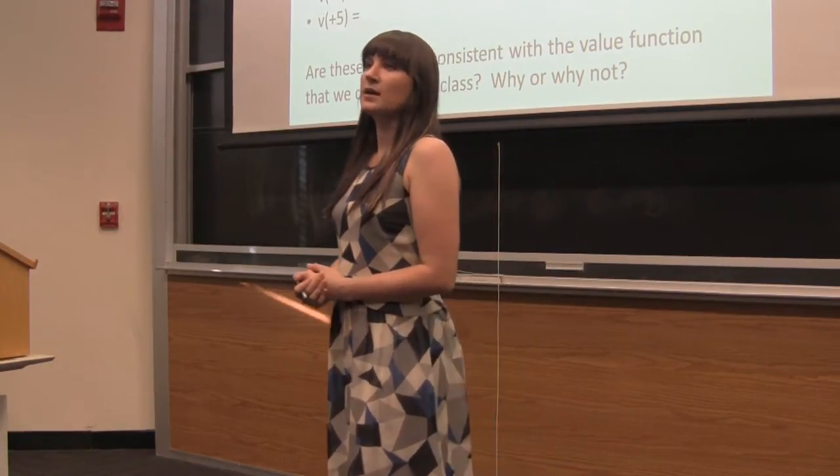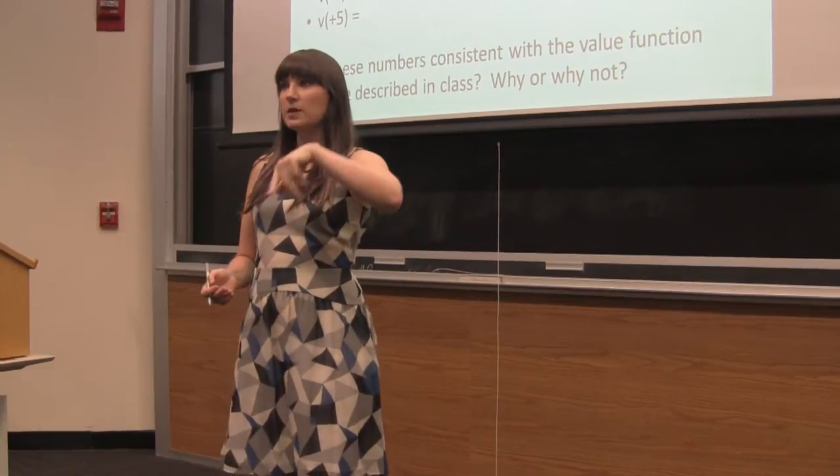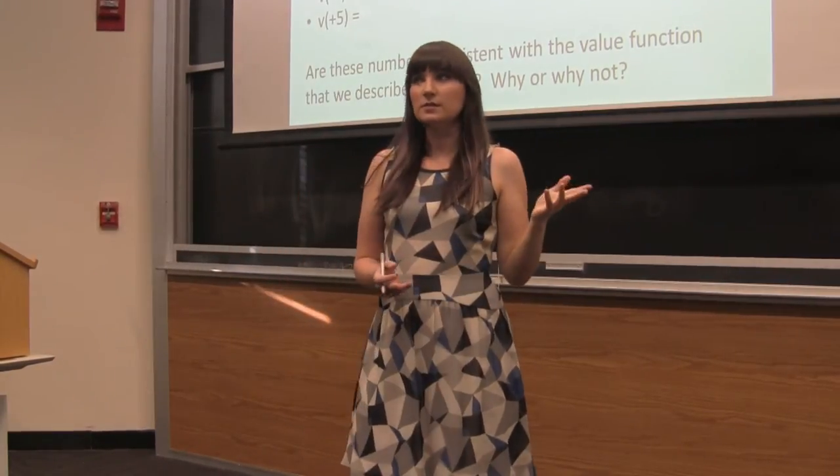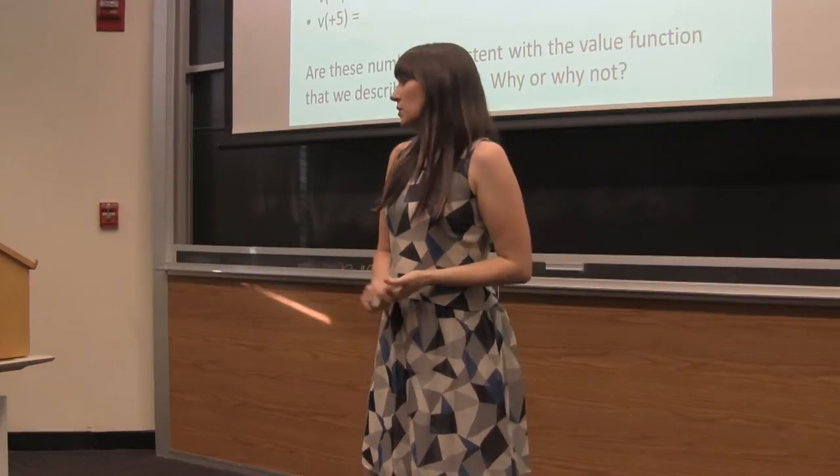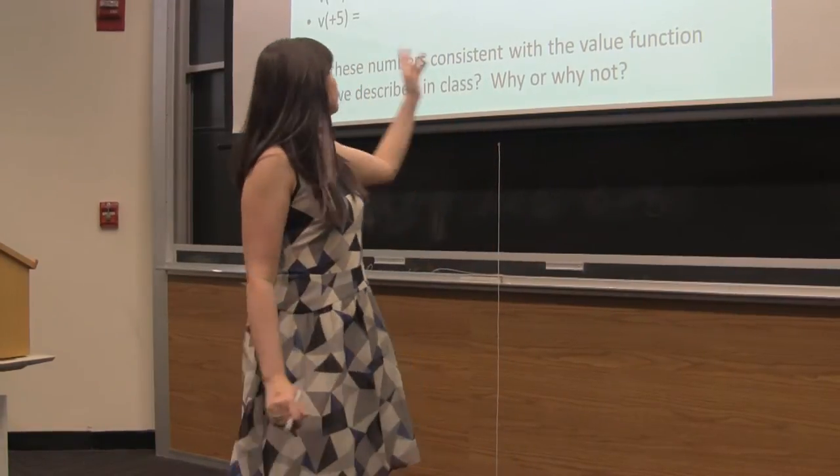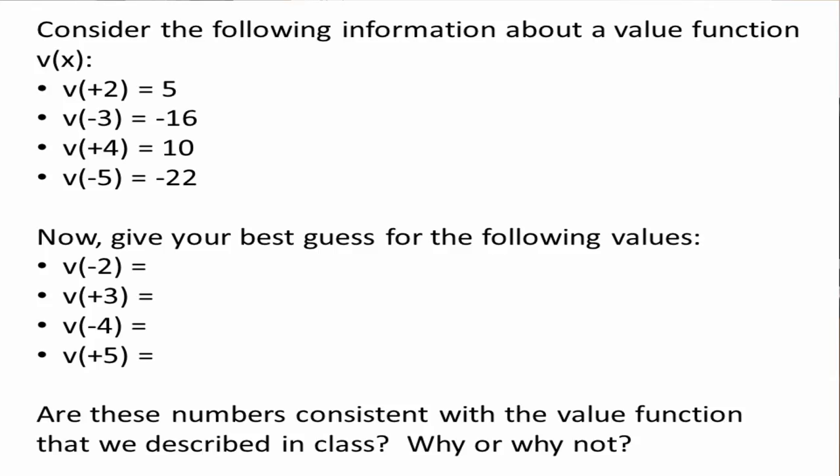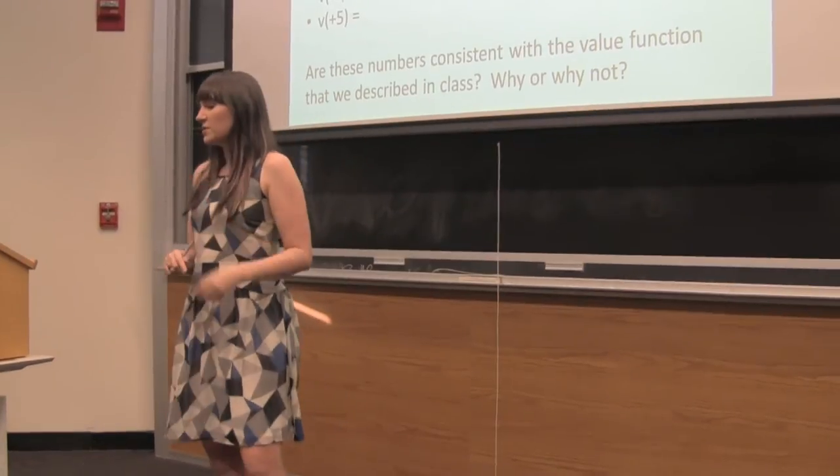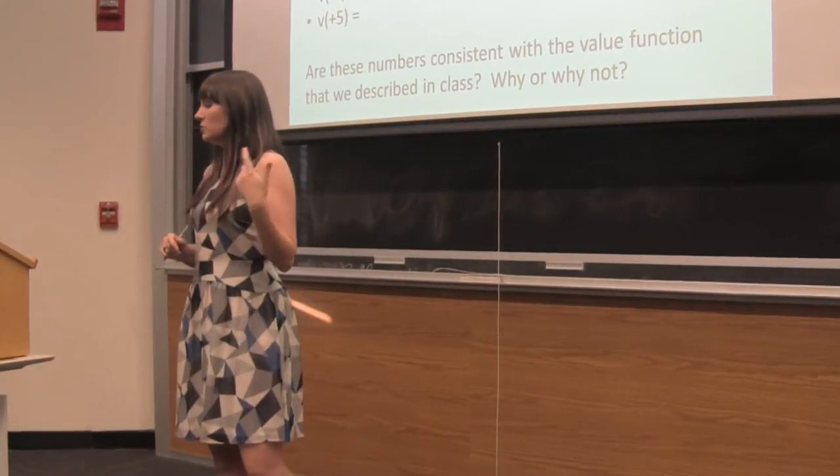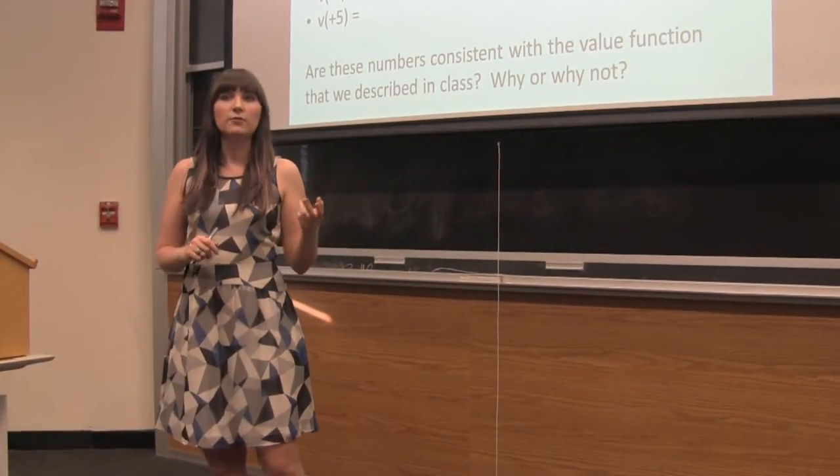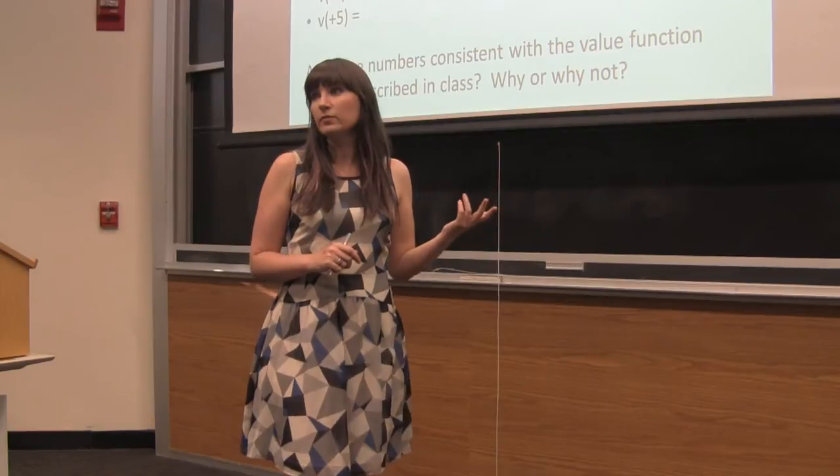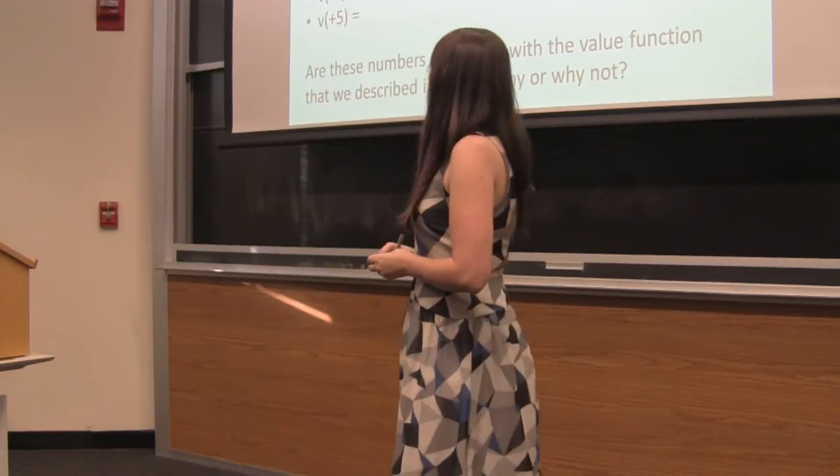And remember, in case it's not obvious, the value function was that S-shaped thing that we talked about for gains and losses. So we have here, I gave you some information, and remember what we talked about regarding the pluses and minuses? Obviously the pluses just represent gains, the minuses just represent losses. So I gave you some information about a gain of 2, a loss of 3, a gain of 4, and a loss of 5, right?